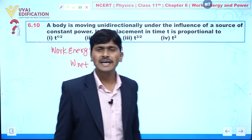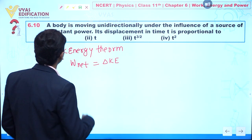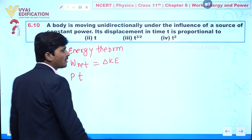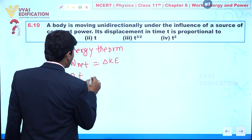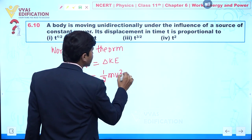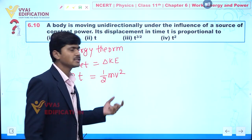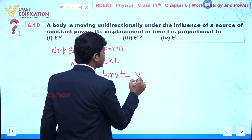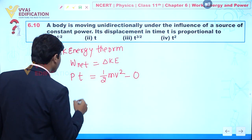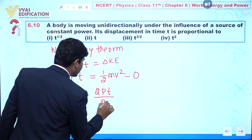Net work done equals final kinetic energy minus initial kinetic energy. We can also write net work done as P multiplied by t — power multiplied by time. Assuming the body starts from rest, initial kinetic energy is zero, so we have Pt = ½mv². From here, v² = 2Pt/m.